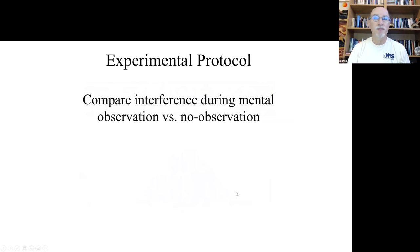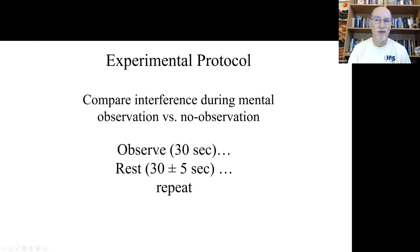So we compare the interference shape during mental observation versus no observation in 30-second periods. You observe mentally for 30 seconds, and then you withdraw your attention for 30 seconds, plus or minus 5, and you repeat this many times. So the measurement of interest is what is happening in the interference pattern as a differential measure between observe and rest.